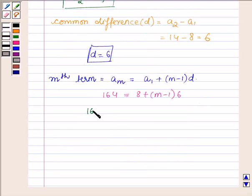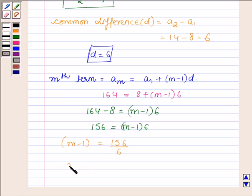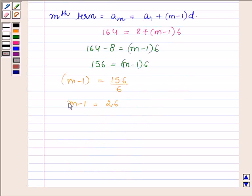This is further equal to 164 - 8 = (m - 1)(6), which further implies that 156 = (m - 1)(6), or (m - 1) = 156/6, which implies m - 1 = 26 or m = 27.